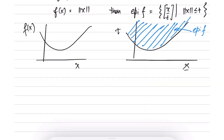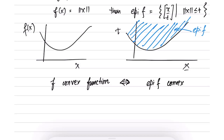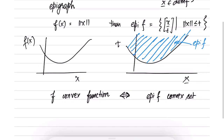The link between convex sets and convex functions can be seen here: f is a convex function if and only if its epigraph is a convex set. That condition is equivalent to saying f is convex. So this is another way of verifying whether a function is convex — calculate its epigraph and verify it is a convex set, and vice versa.